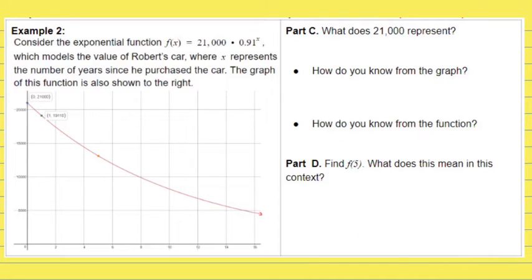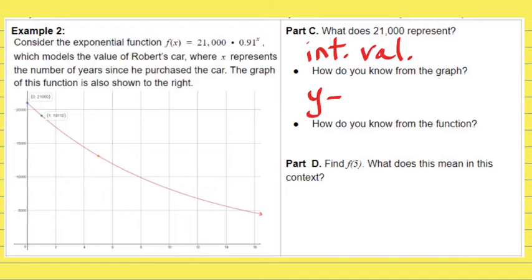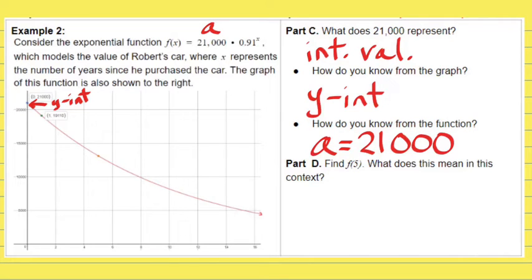A couple more parts of this problem. What does 21,000 represent? That is the initial value of the car. From the graph, you look at the y-intercept. From the function, the value of A, which is in front of 0.91, is 21,000. Part D: find F of 5 — what does it mean in context?